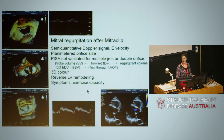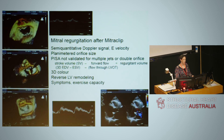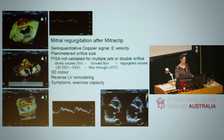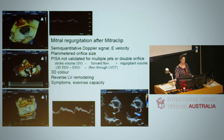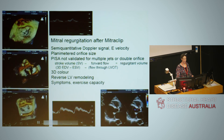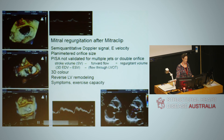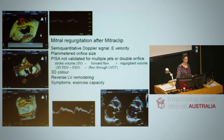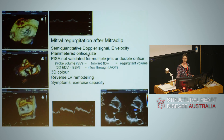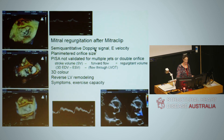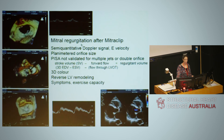How do we measure mitral regurgitation in unusual situations, for example after a MitraClip? The top panel shows a valve with reduced coaptation before the clip. The second shows the first clip being oriented to the anterior and posterior leaflet. The final image shows two clips in place, with a double orifice — an owl-eye appearance. We cannot use PISA because of the double orifice and multiple jets. We can use semi-quantitative assessment: jet size, E-velocity, direct orifice measurement, and pulmonary venous flow.